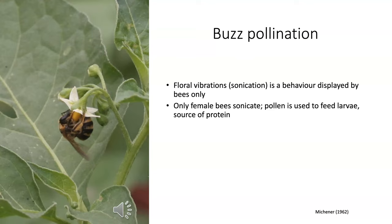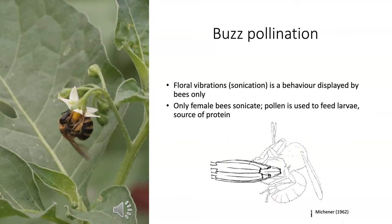There are many interesting aspects of buzz pollination. Basically, you have a type of flower that is visited by a subset of animal visitors — in particular female bees only. When these bees land on one of these flowers, they grab the anthers with their mandibles and curl their body in a C-shape, as seen in this classic diagram from Michener in the 1960s. Once curled, the bee begins vibrating and the vibrations cause the pollen to come out.